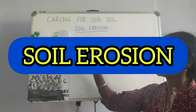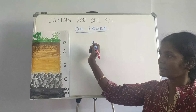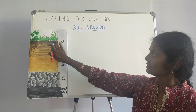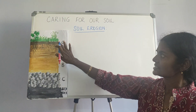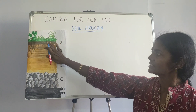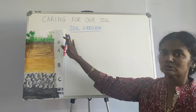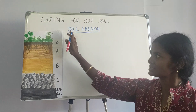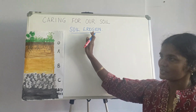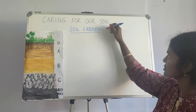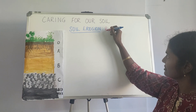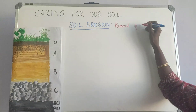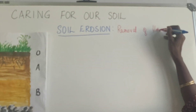Next we move on to soil erosion. What is soil erosion? Basically, what happens is the top layer of the soil — that's horizon O — is removed due to natural or man-made activities, and that results in soil erosion.